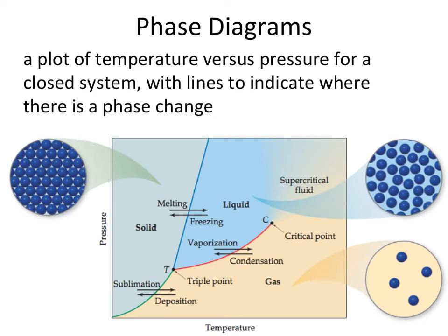Anytime you're looking at anywhere away from the actual curves themselves, you're in whatever phase is being represented in that specific region. The critical point represents that temperature and pressure at which you are at the last-ditch effort of having a liquid phase.